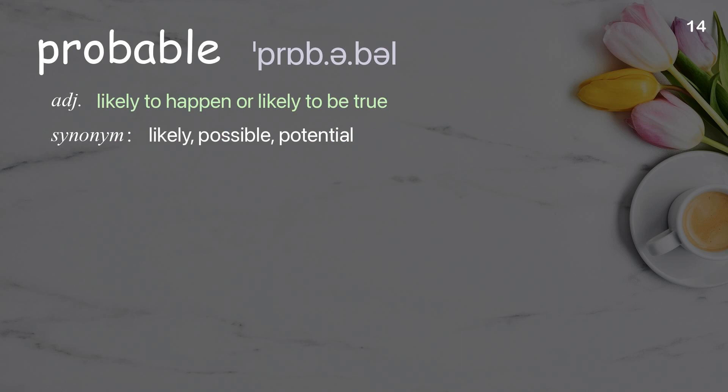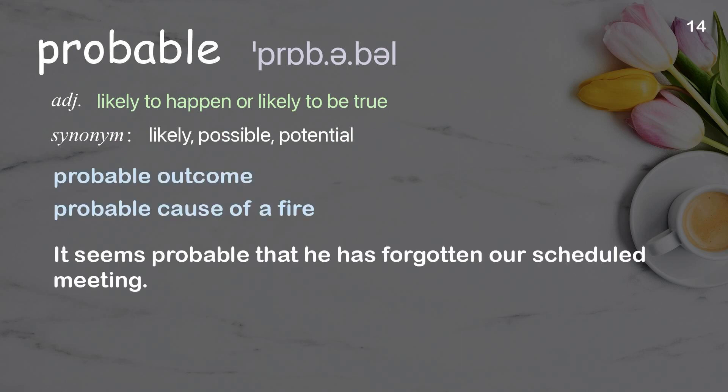Probable: likely to happen, or likely to be true. Examples: probable outcome, probable cause of a fire. It seems probable that he has forgotten our scheduled meeting.